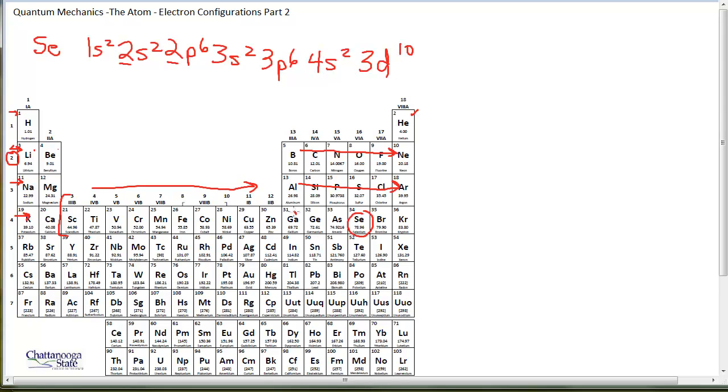And then to get to selenium, 1, 2, 3, 4 boxes into the 4p section, 4th row, p section, 4p4. So selenium's electron configuration is 1s2, 2s2, 2p6, 3s2, 3p6, 4s2, 3d10, 4p4.